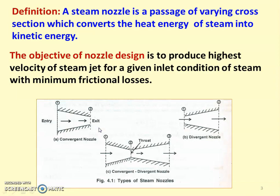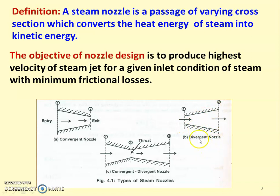These are the different types of nozzle available. The first is the convergent nozzle, the second is the divergent nozzle, and the third is the convergent-divergent nozzle, popularly known as the CD nozzle. In the convergent nozzle, the area is constantly decreasing. In the CD nozzle, the area initially decreases, reaches a minimum value called the throat section, and then increases.